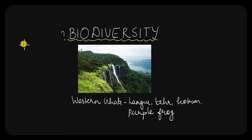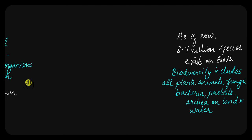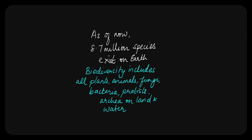What is this biodiversity? Biodiversity is nothing but the biological diversity of all organisms on Earth. It includes all the animals, the plants, the microorganisms that live on Earth currently — all the species that have been identified so far. It has been estimated that there are around 8.7 million species that exist on Earth in both land and oceans.